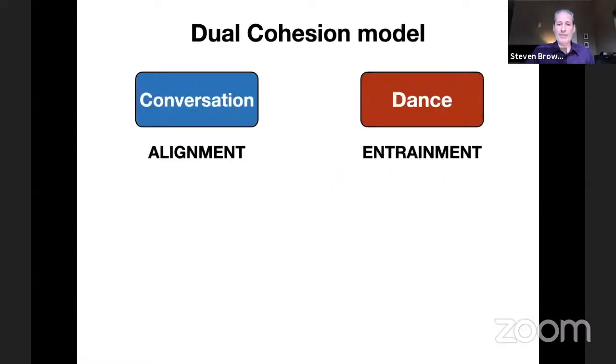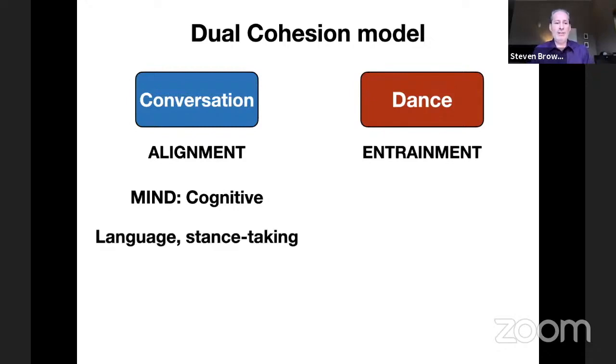To start the talk, I'm going to make this a very dichotomous comparison and make these seem very different, but throughout the talk you'll see how these two mechanisms interact. For now, I'm showing a dichotomous view of conversation versus dance, alignment versus entrainment. I'm framing this as a mind-body dichotomy, but I'm going to bring these two together throughout the talk. Conversational alignment is much more cognitive and involves the exchange of ideas using human-specific processes for language, discourse, and stance-taking.